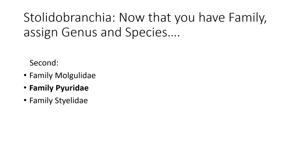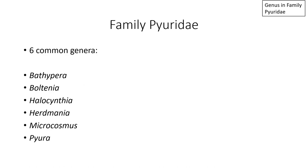Now I'd like to move on to Family Pyuridae. There are six common genera in Family Pyuridae: Bathypera, Boltenia, Halocynthia, Herdmania, Microcosmus, and Pyura.